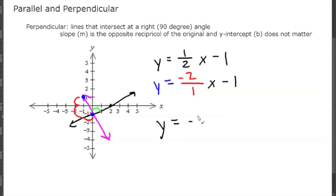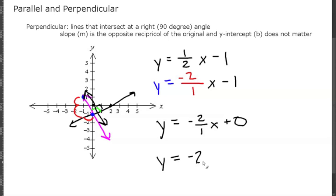So this is just one example of a perpendicular equation. You can simplify this because negative 2 over 1 is simply negative 2, so really all you need to write is y equals negative 2x, and then whatever y-intercept you want — it could be 1, 2, 100, negative 50, anything.